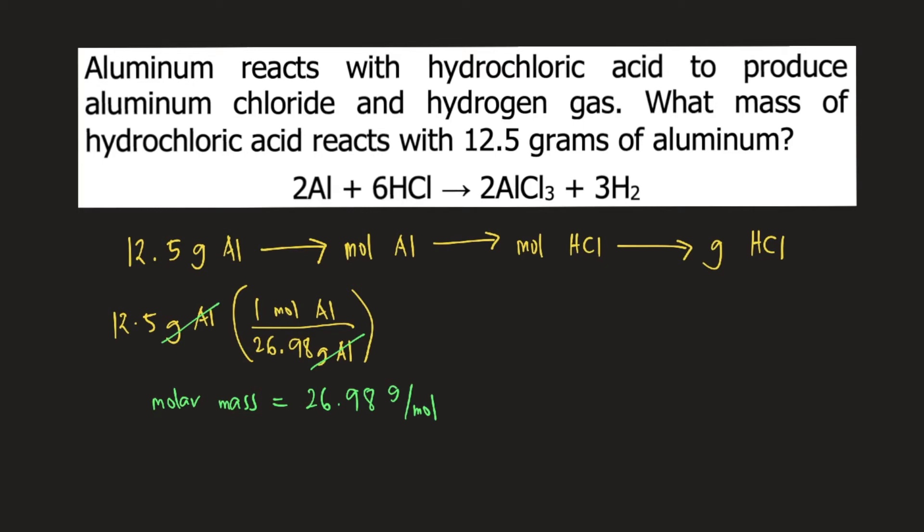Next is to convert this into moles of HCl. How do we do this? We need to look at the balanced chemical reaction. According to the reaction, 2 moles of aluminum require 6 moles of HCl.